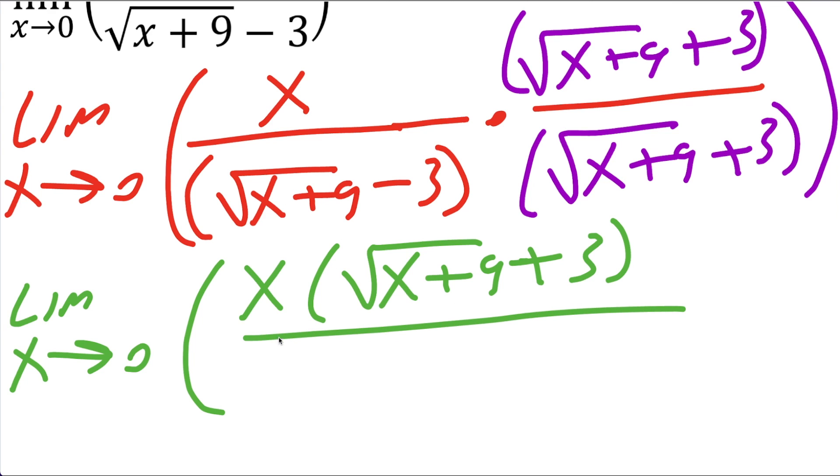so this piece times this piece would give us x plus 9. Then we would have this piece times this, so that would be 3 the square root of x plus 9, but we also have negative 3 times the square root of x plus 9, so it cancels. Now we have negative 3 times positive 3, and we get a negative 9.